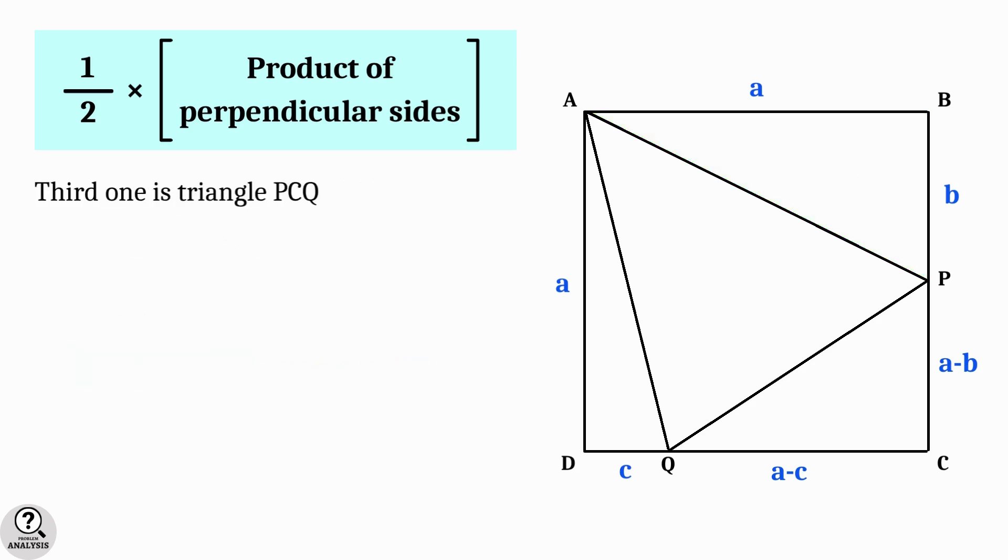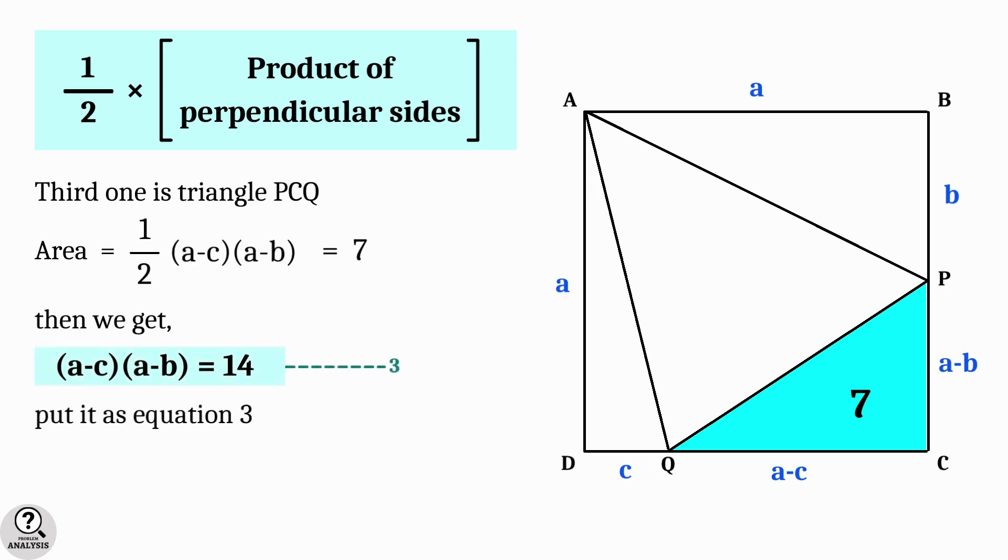And finally for the triangle BCQ, the perpendicular sides are a minus c and a minus b. That implies area equal to half into (a-c) into (a-b), which is equal to 7 square units. That is (a-c) into (a-b) is equal to 14. And put this as equation 3.